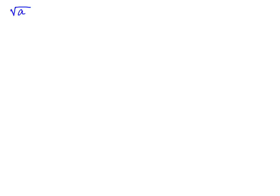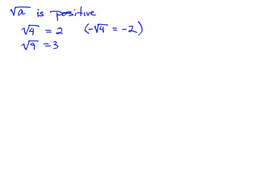When we write the square root of a number A with no sign in front of it — no minus sign — we're always talking about a positive number. That's called the principal square root. We know there are two numbers we can square to get A: one positive and one negative. But if we write the radical symbol without a minus sign in front, we're talking about the positive one. So the square root of 4 means positive 2, the square root of 9 means positive 3. If we wanted the negative one, we'd put a minus sign in front — so negative square root of 4 means negative 2.